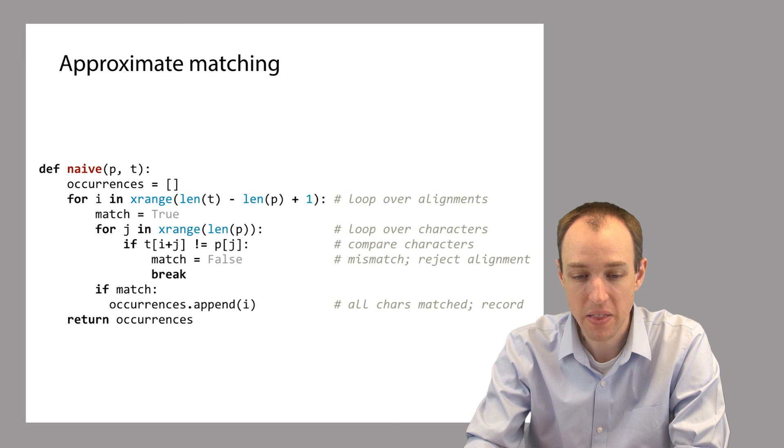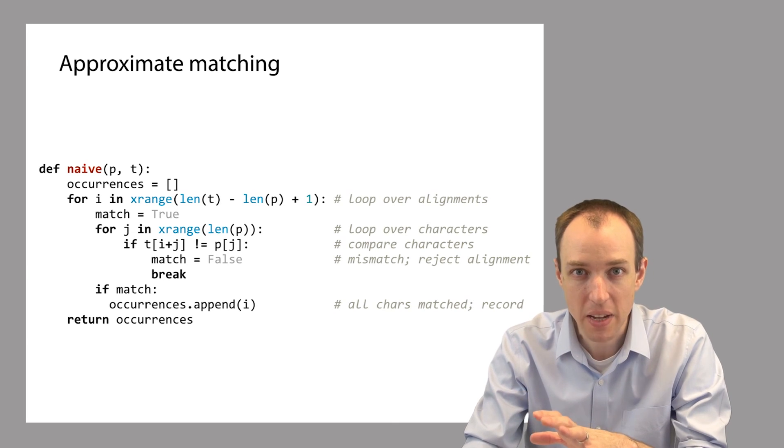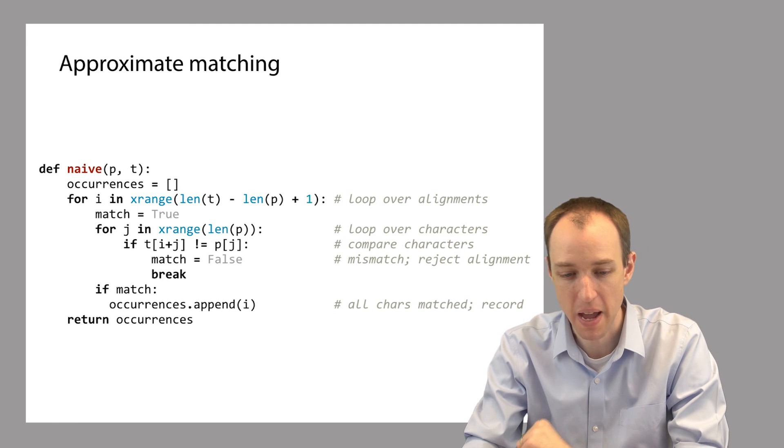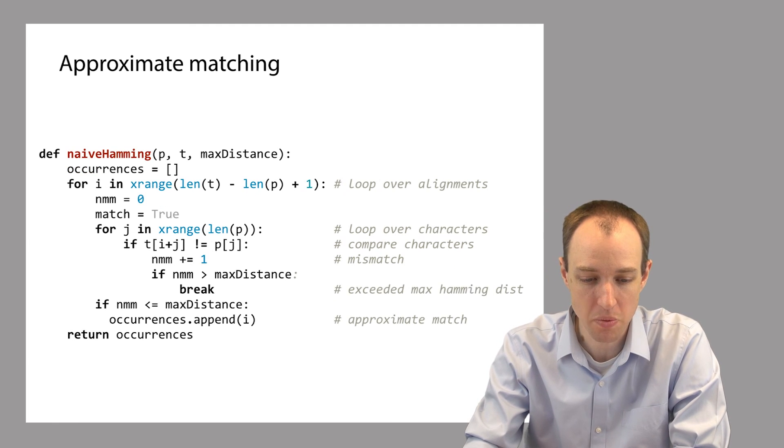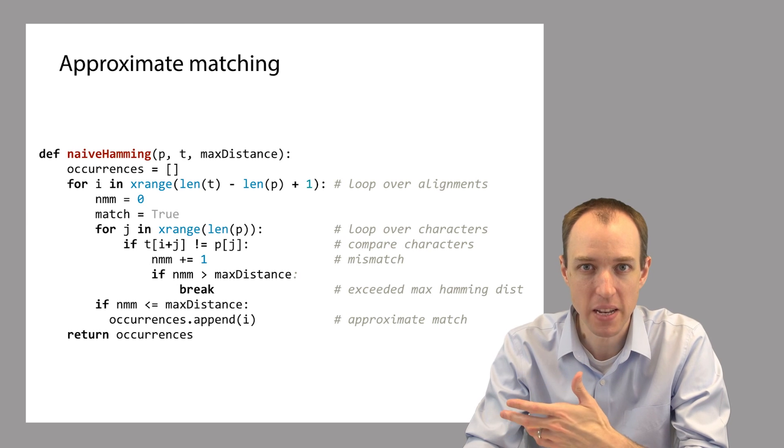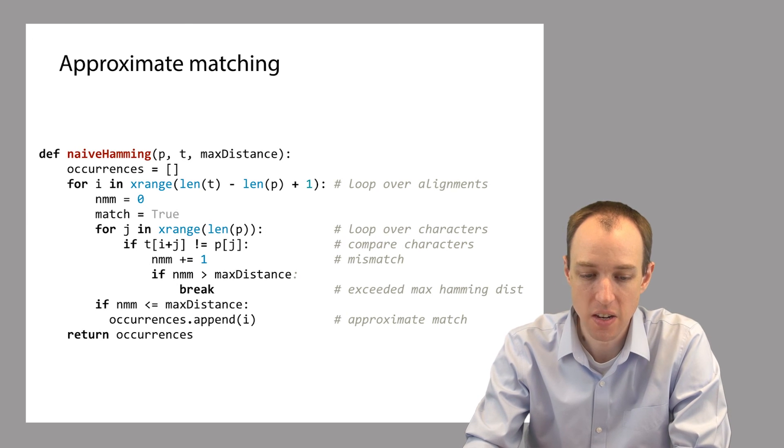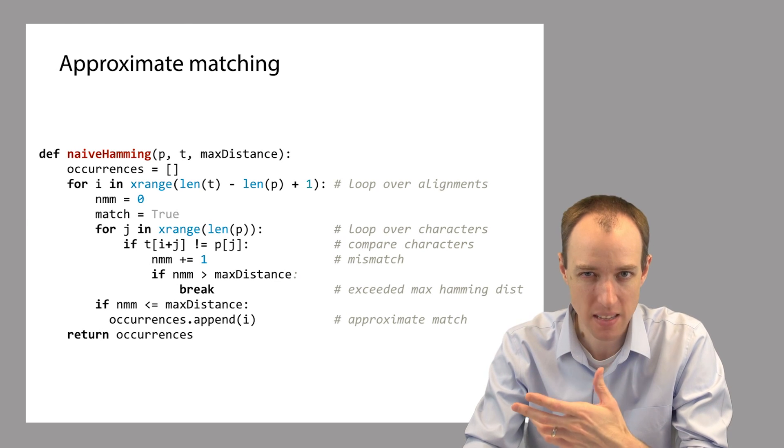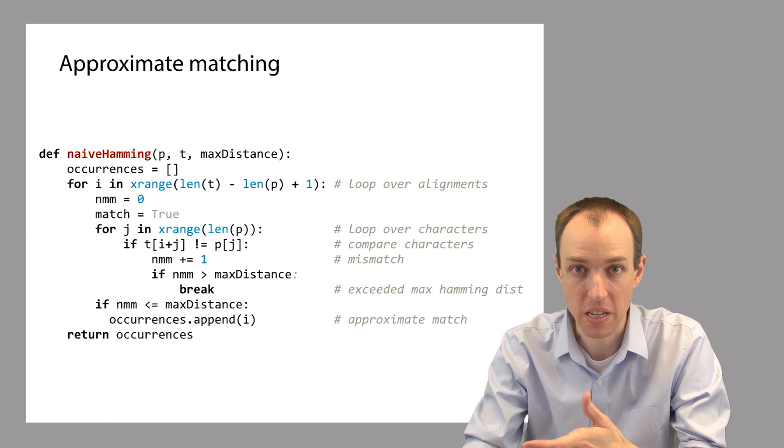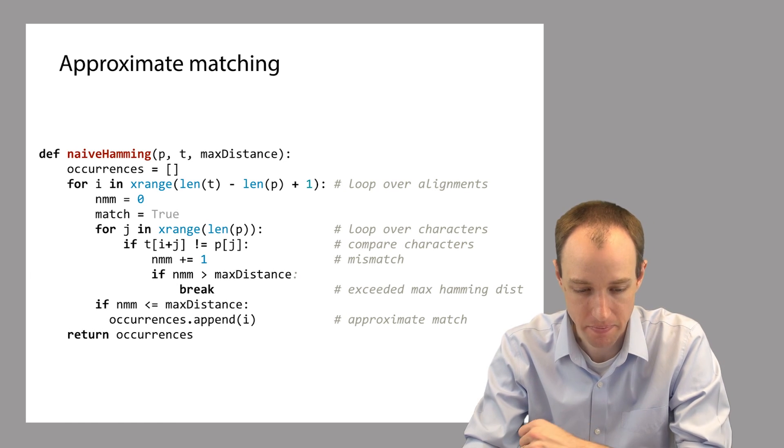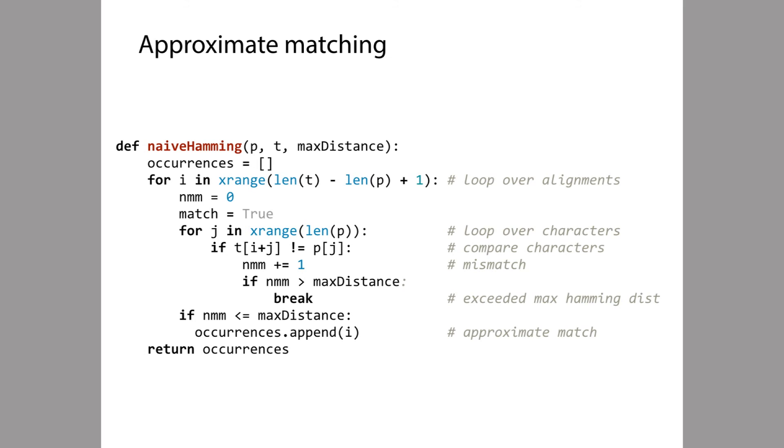Yes, it's actually pretty simple. So the main thing we have to do is prevent the inner loop from immediately giving up as soon as we encounter a single mismatch. Instead, we'd like the inner loop to keep track of how many mismatches have been seen so far. And then only when we exceed the maximum number of mismatches allowed do we break out of the inner loop and give up on that alignment. So here's an implementation of this idea. And we'll see this implementation again in an upcoming practical session.